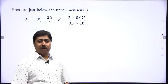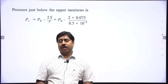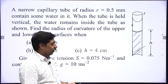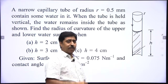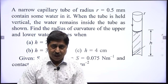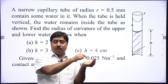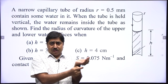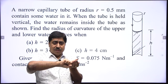Let's see how to solve this question. Though we can attempt it using forces, it is far easier to use pressure. So, pressure just below the upper meniscus — here the pressure is atmospheric pressure. All of you must be aware that if we have a curved liquid surface that is spherical in shape, pressure on the concave side is always higher than on the convex side. The pressure on the concave side exceeds the pressure on the convex side by 2s/r, where s is the surface tension and r is the radius of curvature.